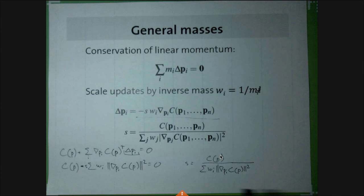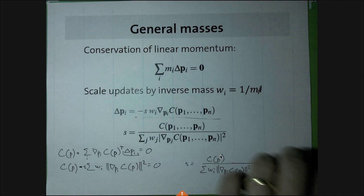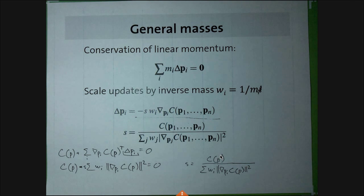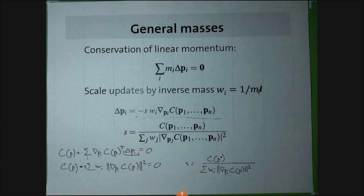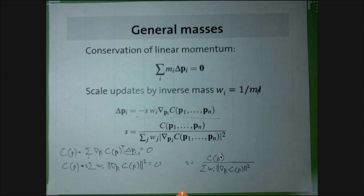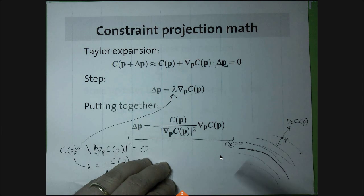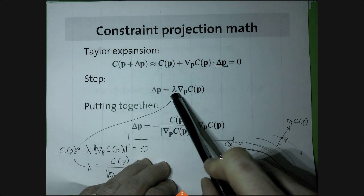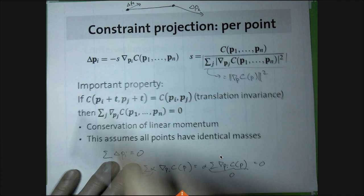Stiffness in PBD is sort of a hack: stiffness K multiplies the displacement. If K is 1, you do the full displacement. If K is smaller, the constraint is not projected completely. It does what you want conceptually — lower stiffness means the constraint is less strict — but it's not compatible with Hooke's law stiffness. Oscillation can happen if you try to be smart about constraint ordering, such as always projecting the most violated constraint first.